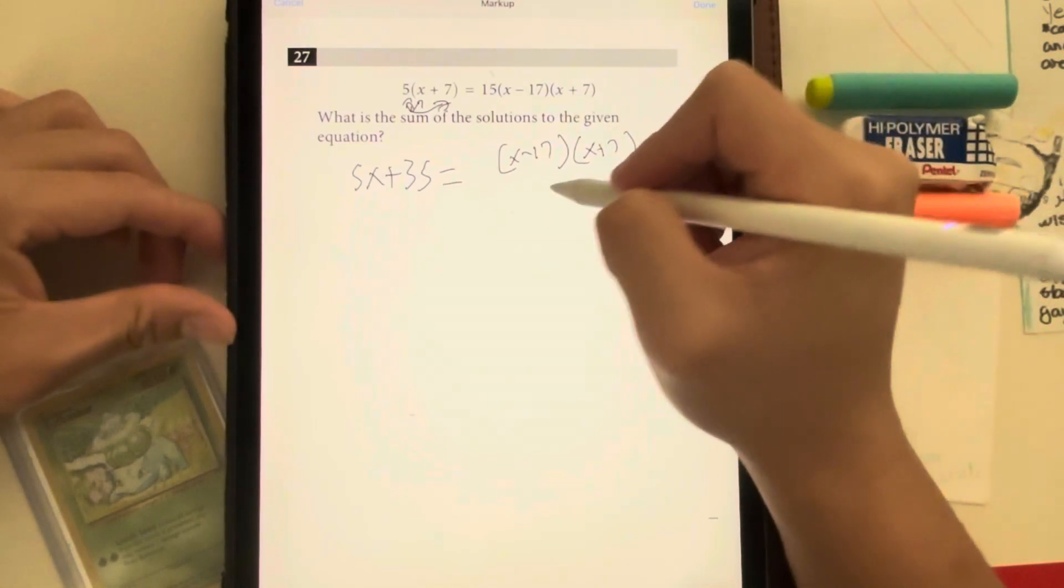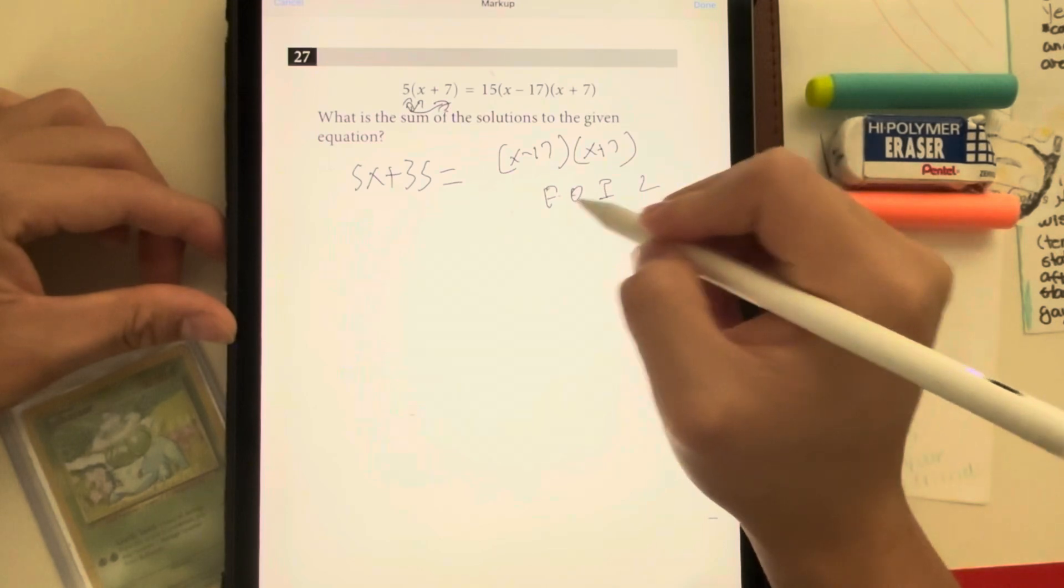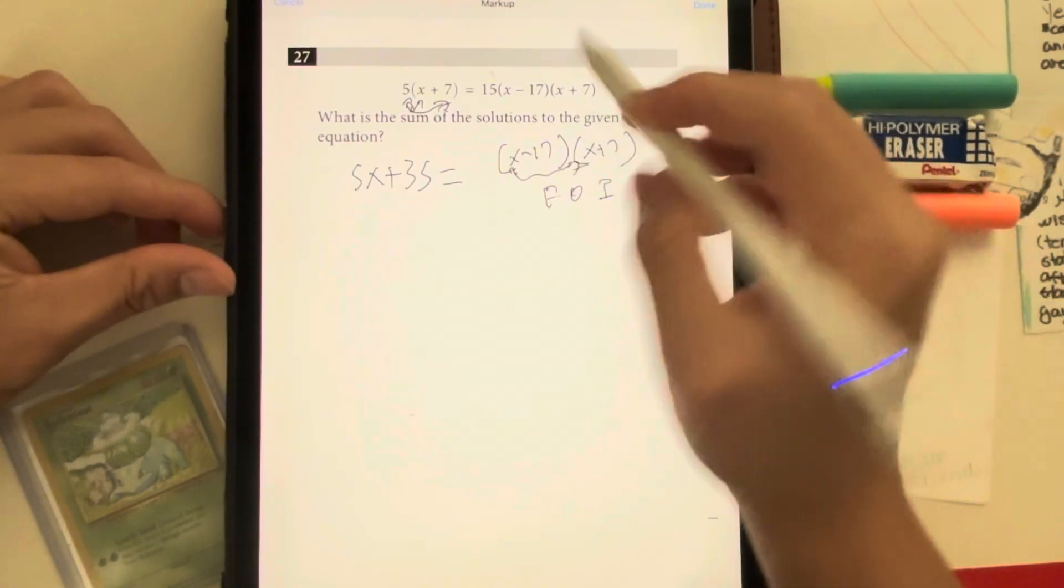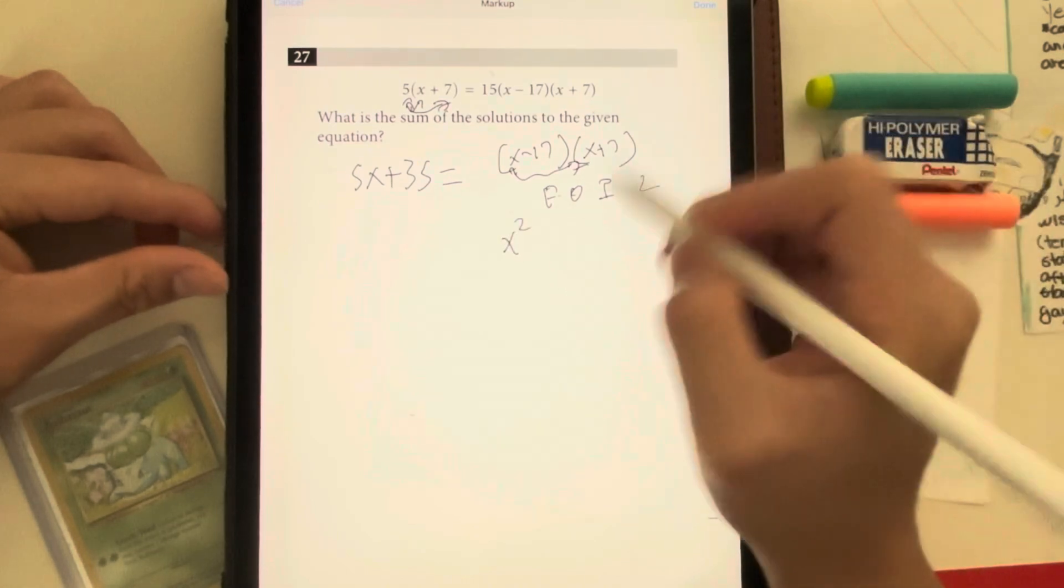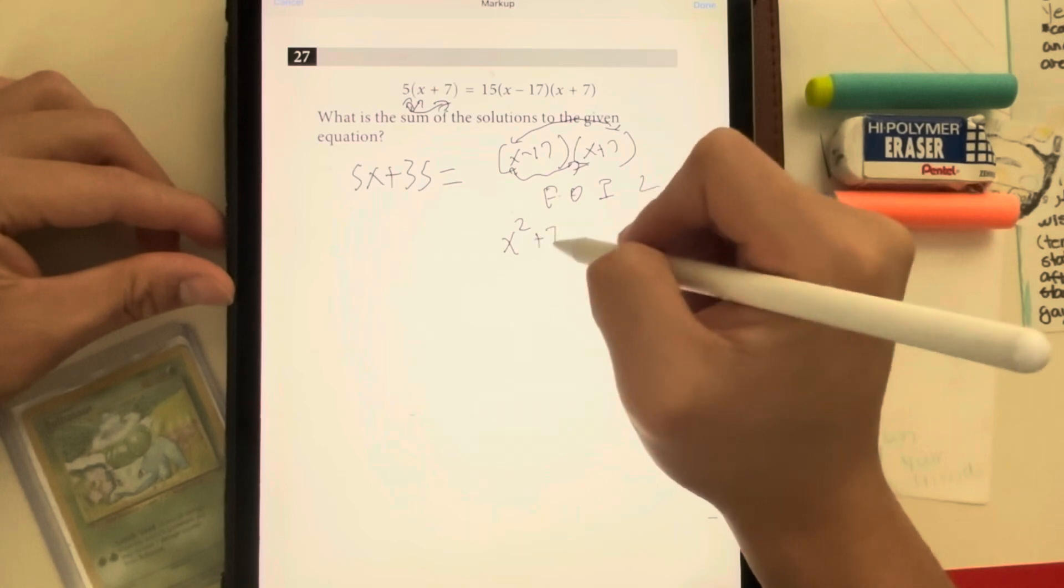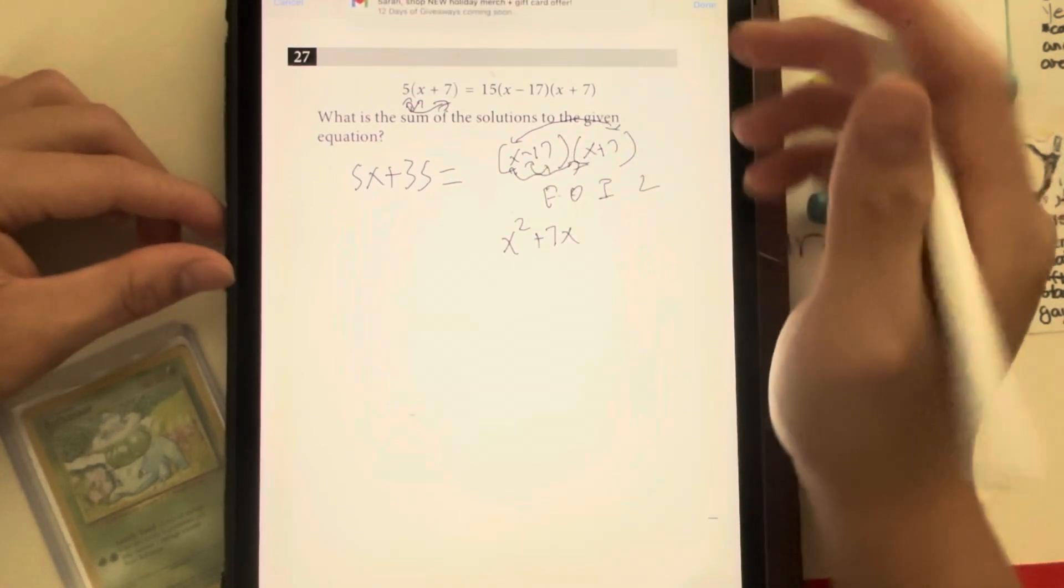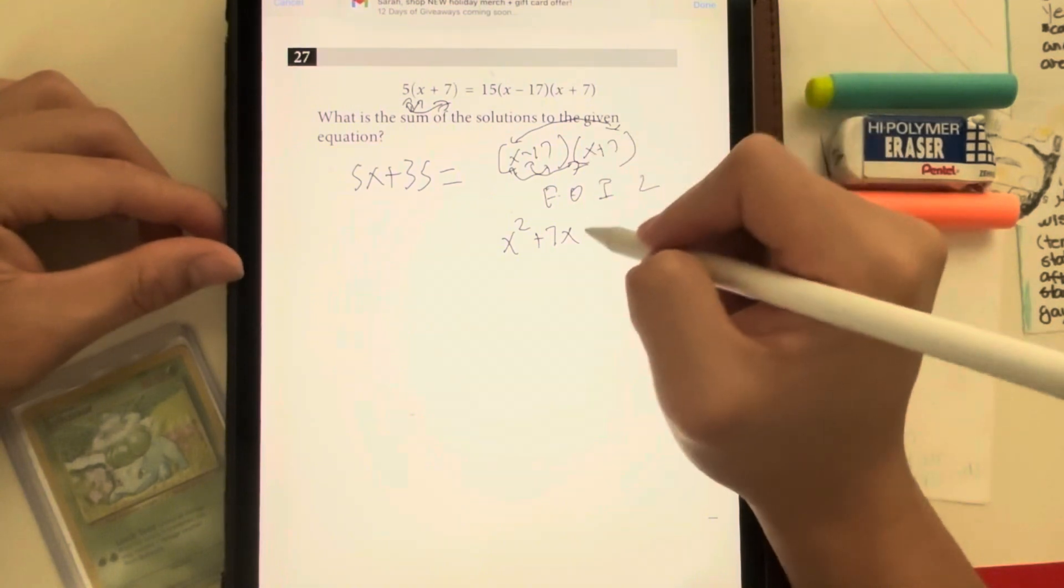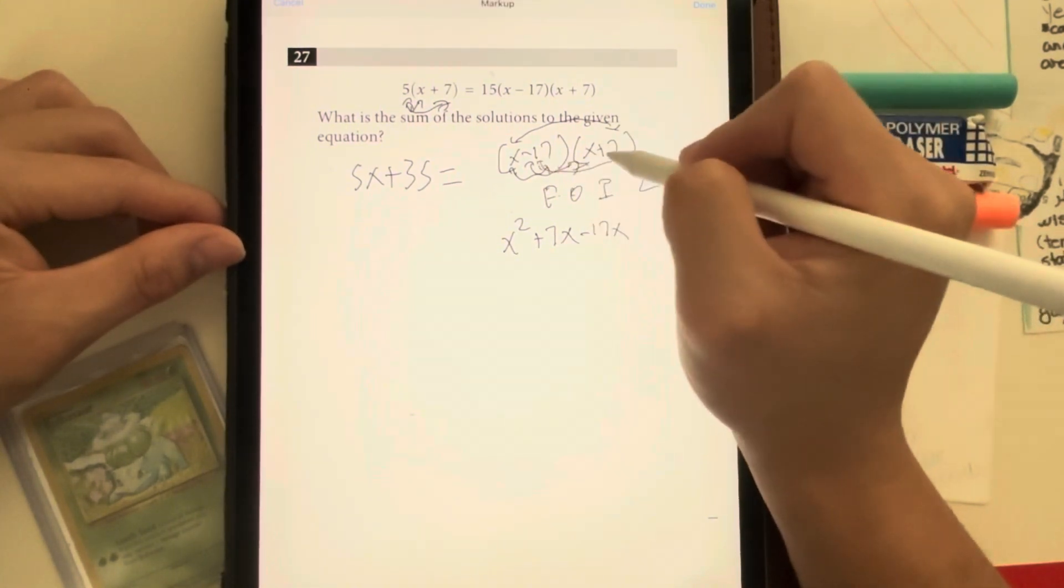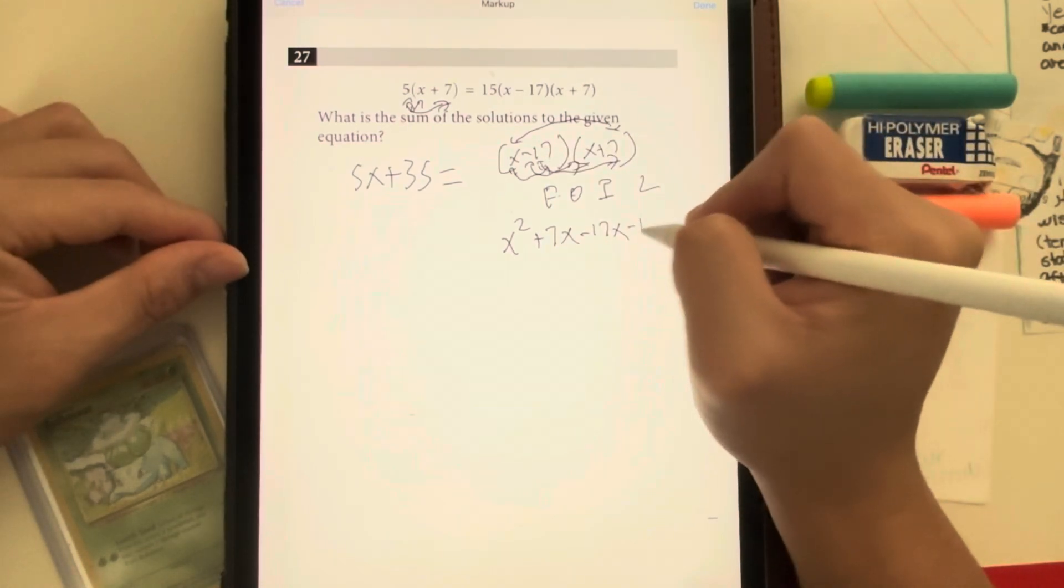We have to remember FOIL, which is F is first, O is outer, I is inner, L is last. First we do x times x, which is going to give us x to the second power. For outer, we do x times 7, which gives us 7x. And then for inner, we get negative 17 times x, which is going to give us negative 17x. And for last, we get negative 17 times 7, which gives us a total of negative 119.